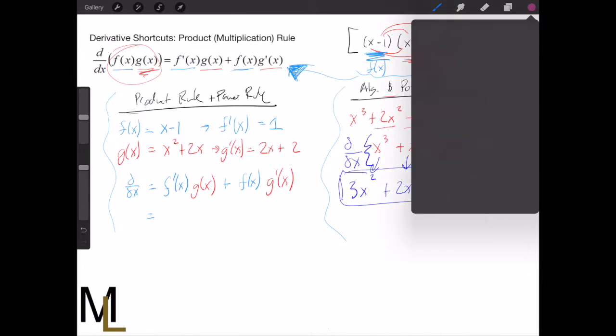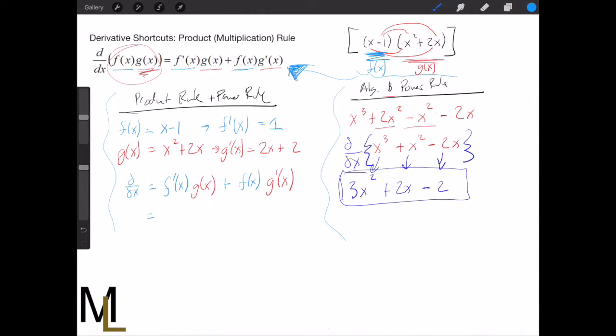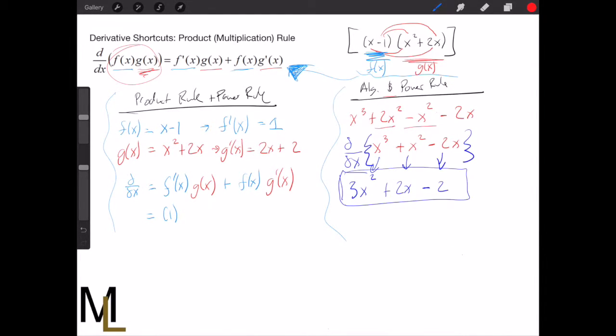And now we need to multiply these out. So we take the derivative of the first, which is 1, times the second, which is x² + 2x.